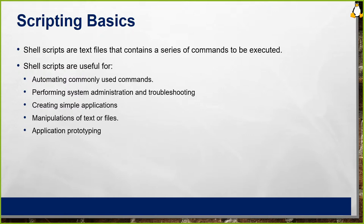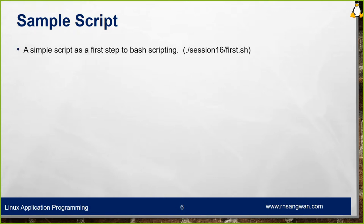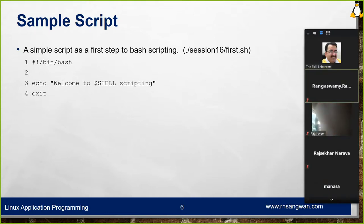A real-world example: a client asked for a script to take a backup of a database only when the log size is more than 200 GB, then move the file automatically without taking the server down. Shell scripting is basically used for automating tasks — conditional automation and execution. A simple first script is available in your directory as first.sh under the session 16 directory.